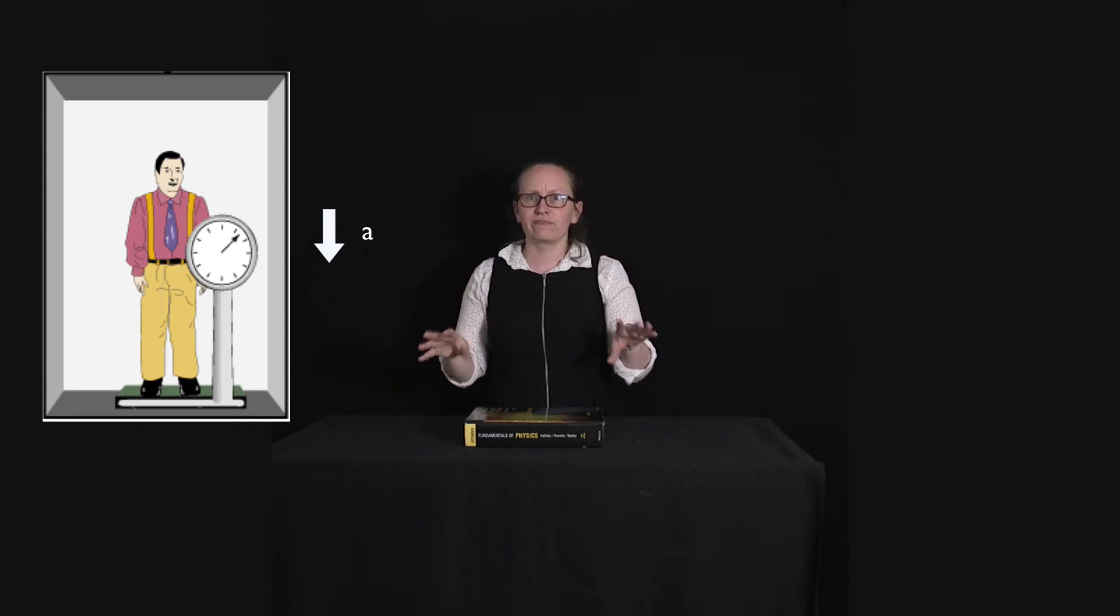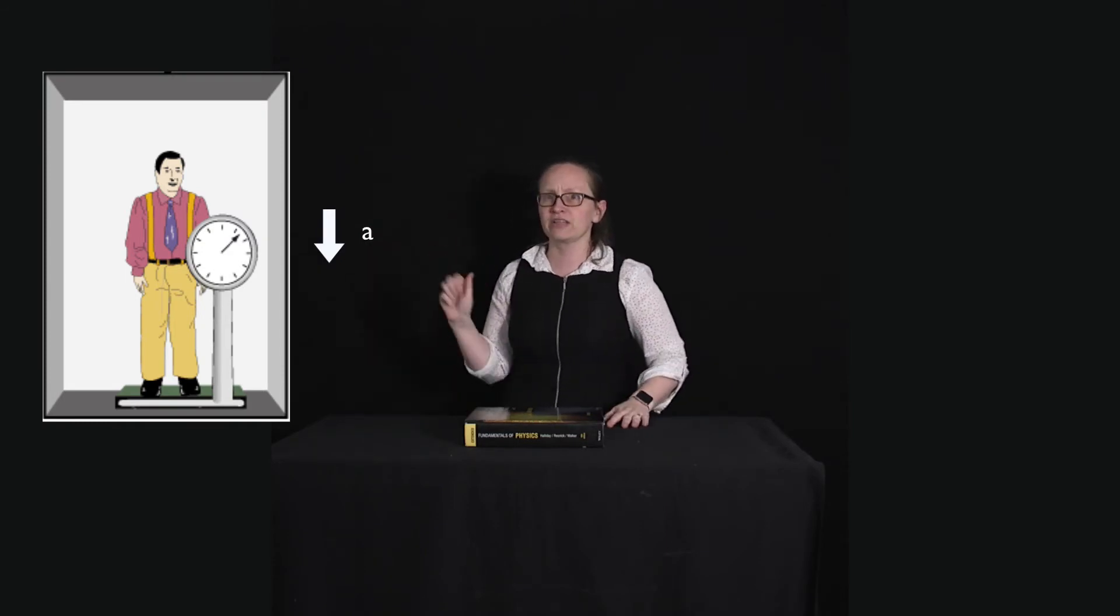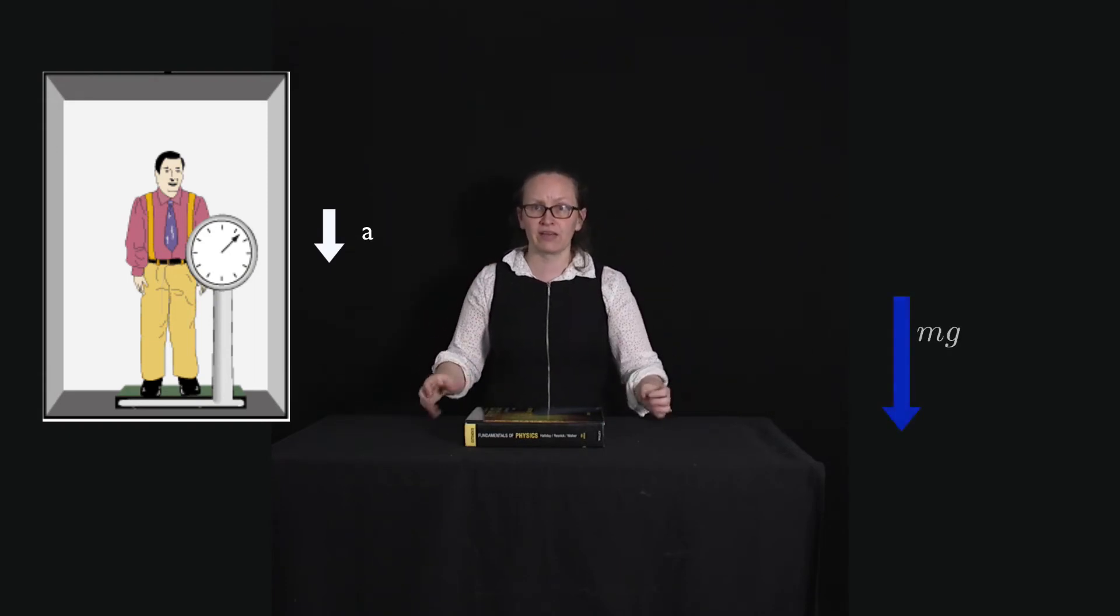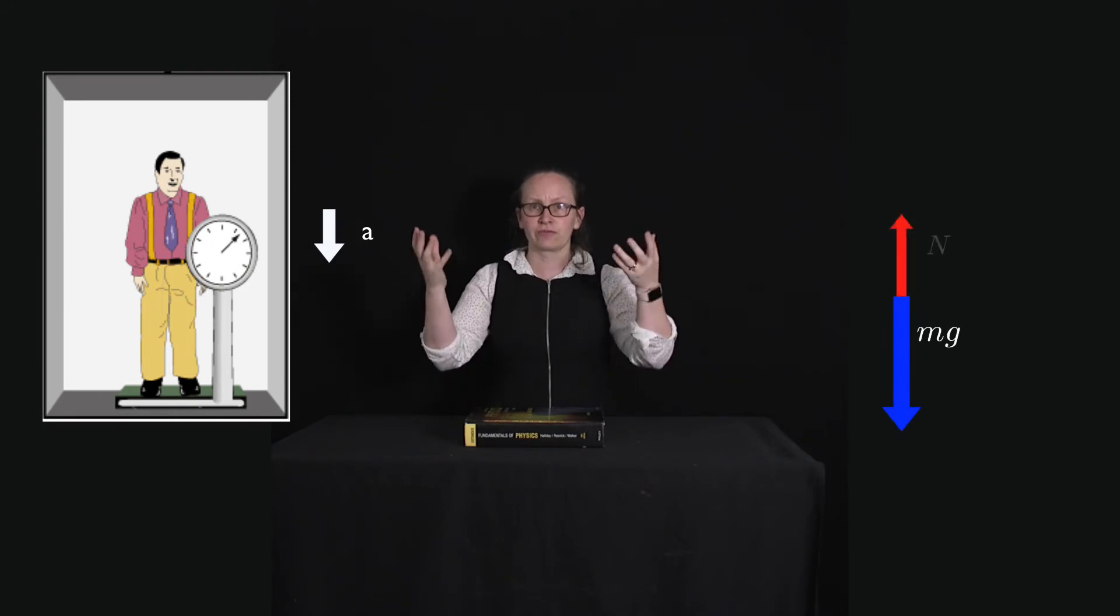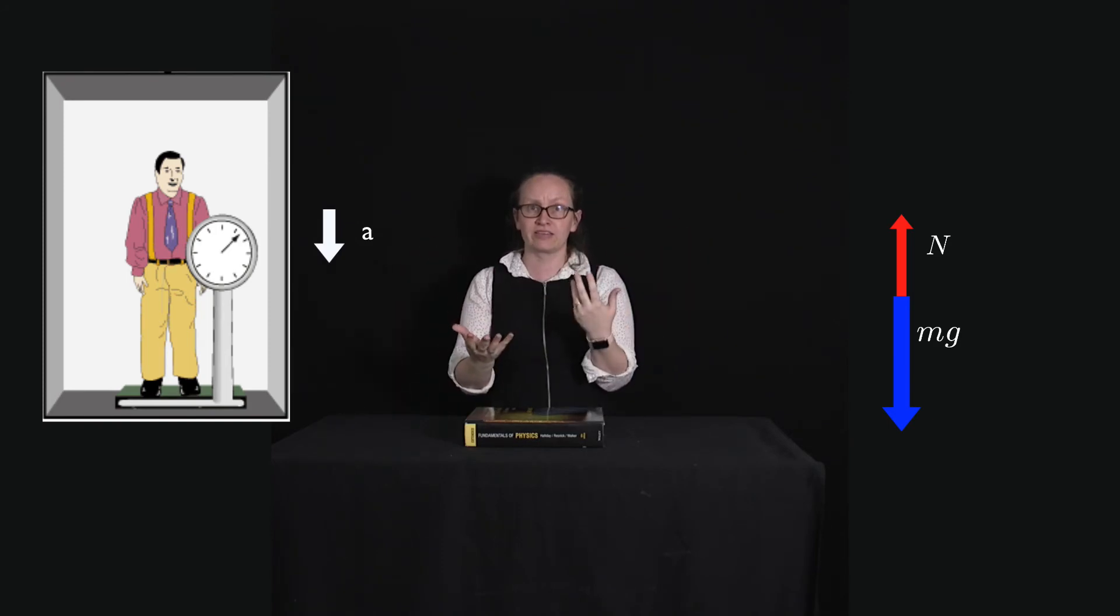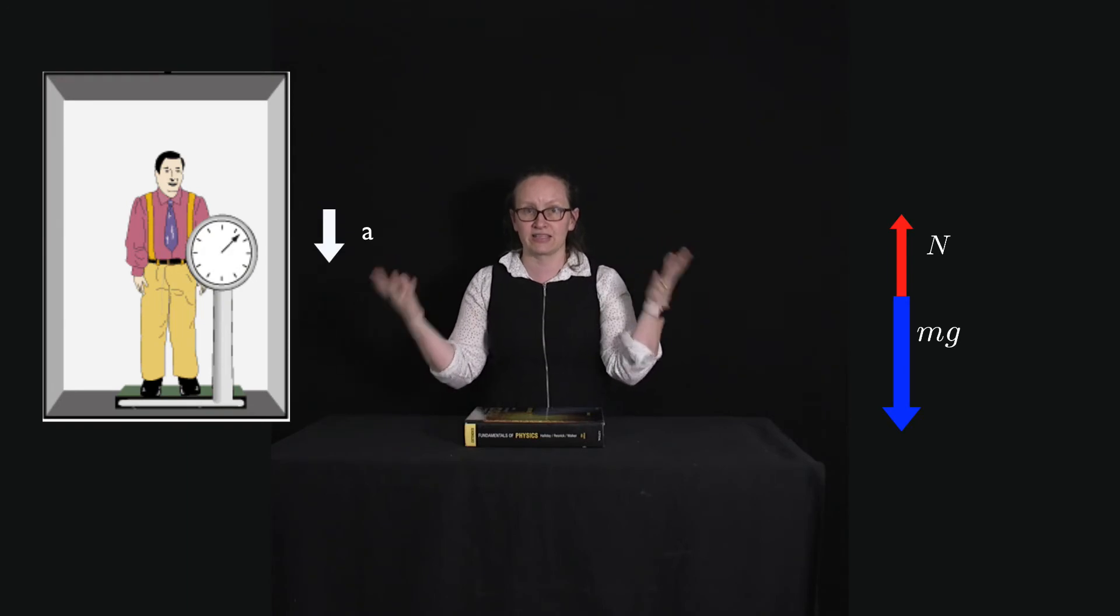Let's draw a free body diagram for our person standing in the lift. The forces acting on the person are the weight force pulling them down and the normal reaction force from the ground pushing them up. And we know that these two forces must add together to give the net force which is equal to the mass times the acceleration.